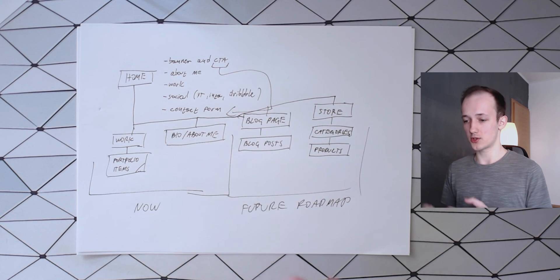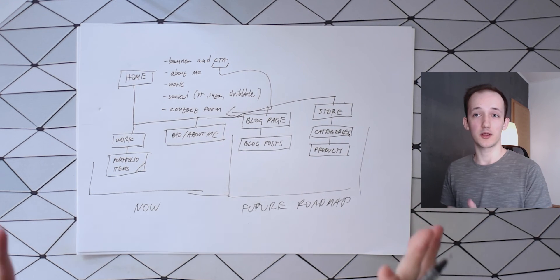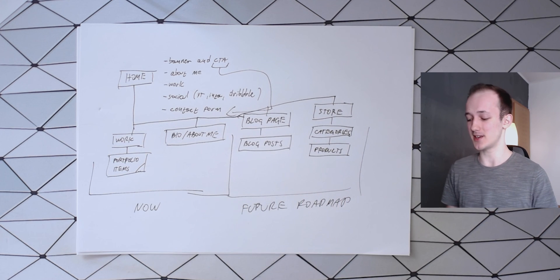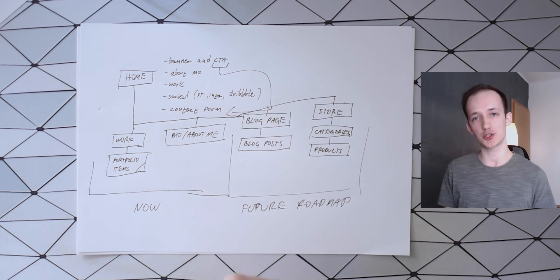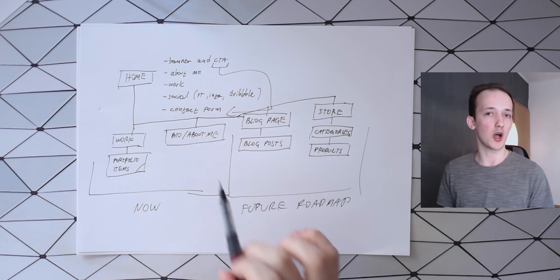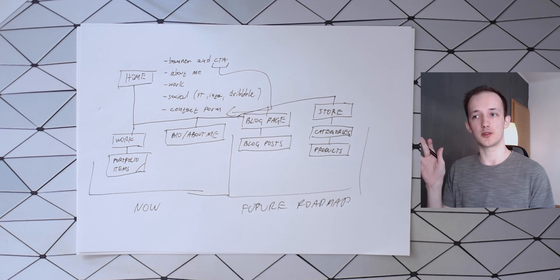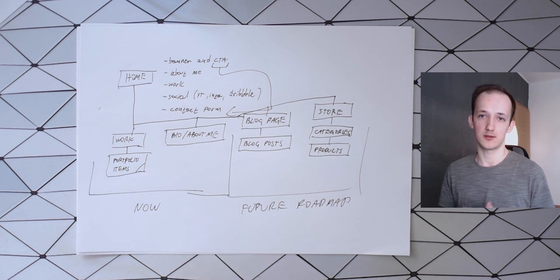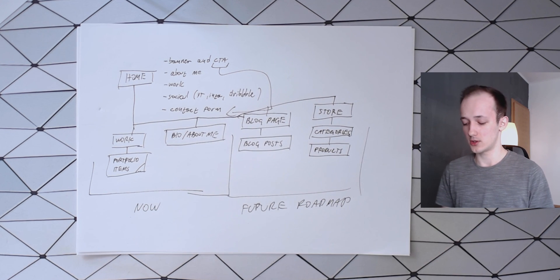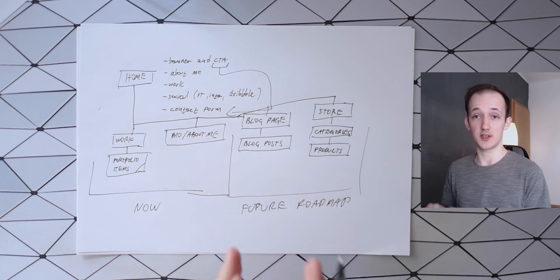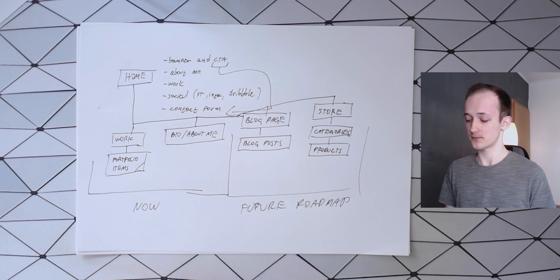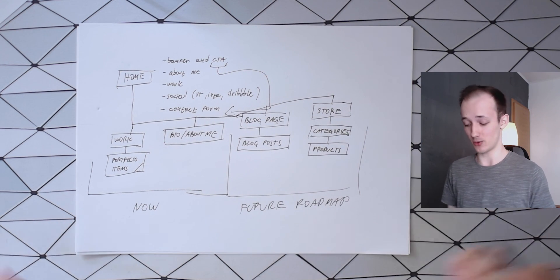The blog and the store are both future roadmap items — I won't even design them right now. But keeping them in mind matters: for example, when designing the main page layout, I want to make sure it could accommodate a long blog post or paragraph and still look good, so I'll have less redesign work when those pages eventually come to life.